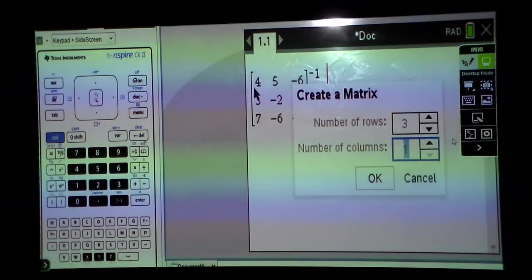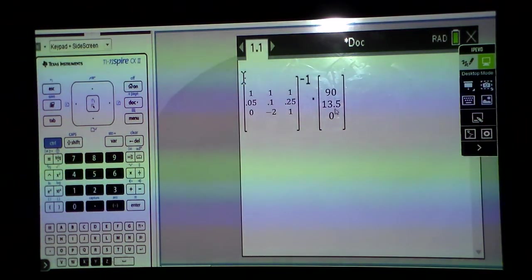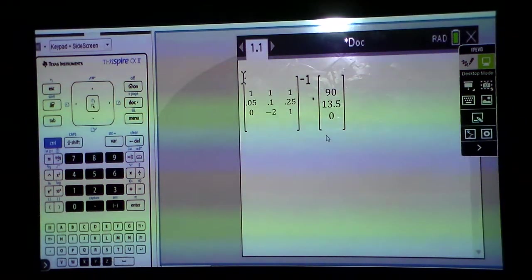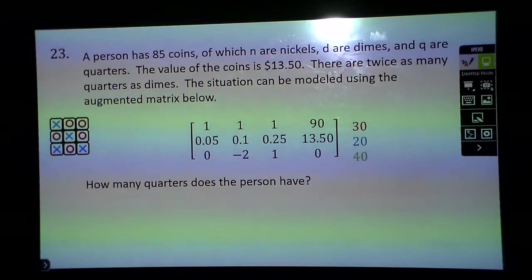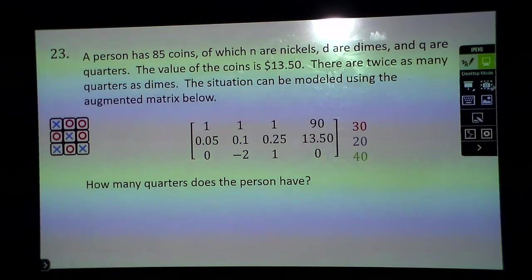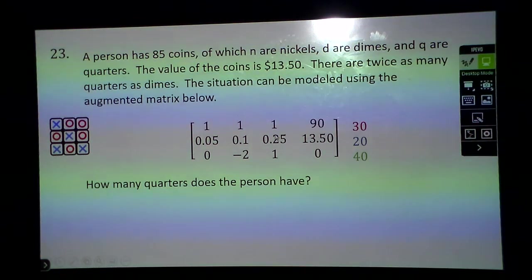Now I'm going to hit this button here and do another matrices, but this time it will be a 3 by 1. See it's changed to a 1, and I'm going to put my 90, my 13.5, and 0. Then I just hit enter and it tells me the answer is 30, 20, and 40. The last number is the quarters because it was nickels, dimes, quarters, so there are 40 quarters.